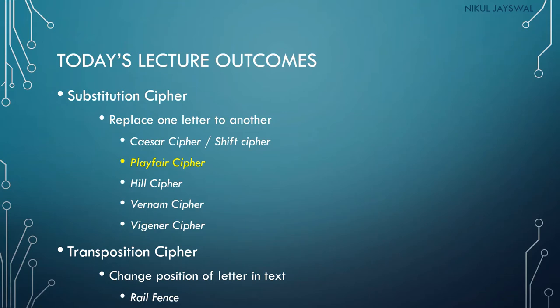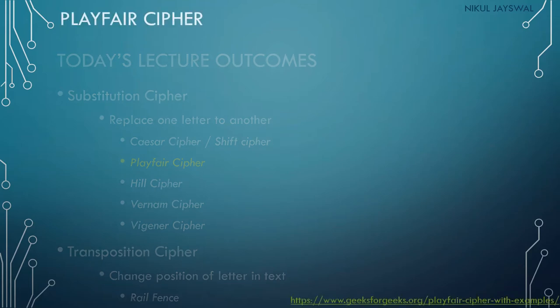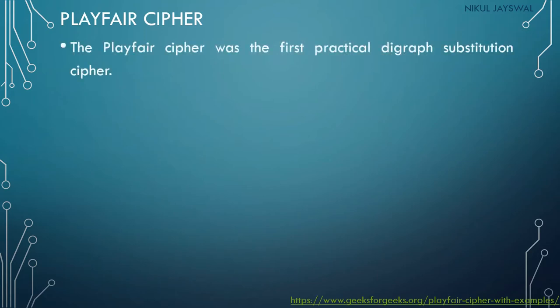In today's lecture, we will see the next algorithm: the Playfair cipher. We are currently discussing substitution ciphers, and having covered Caesar cipher and shift cipher, we now move to Playfair cipher, which is the most important algorithm in this unit.